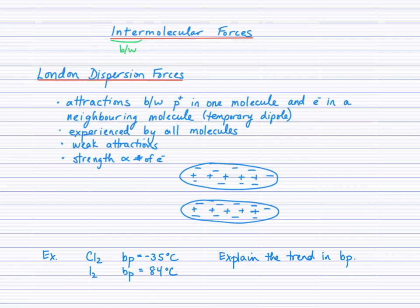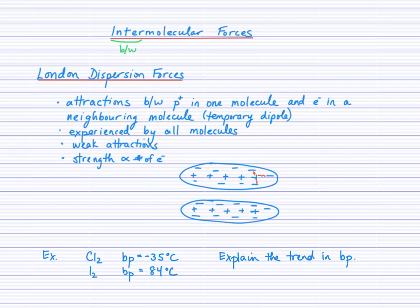The first one is called London dispersion forces. Every molecule will experience London dispersion forces simply because every molecule is made up of atoms, and all atoms have protons in their nuclei and electrons in their atoms and throughout the molecule. Opposite charges attract — the protons in a nucleus will have attractions for the electrons in nearby atoms, and there will also be attractions, much weaker, between the protons in one molecule and electrons in a neighboring molecule.